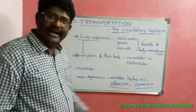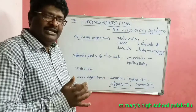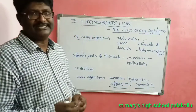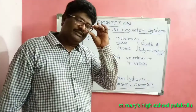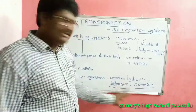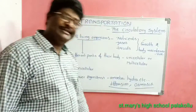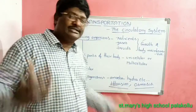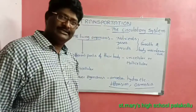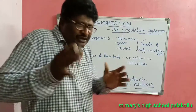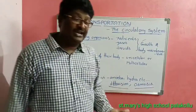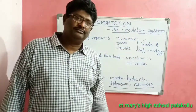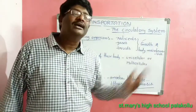In lower organisms like amoeba and hydra, materials are transported by the process of diffusion and osmosis. But in higher animals or higher living organisms, whether plants or animals, if they use diffusion or osmosis to transport materials to different parts of their body, it takes too long — too much time. Diffusion and osmosis are sufficient only for lower organisms, not for multicellular animals, big trees, or larger living things.